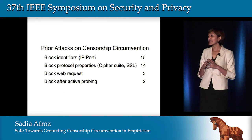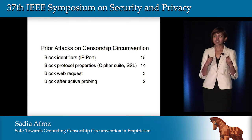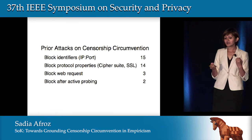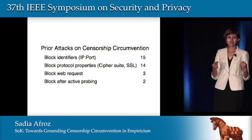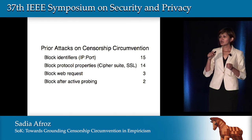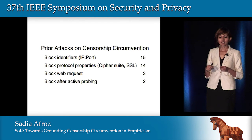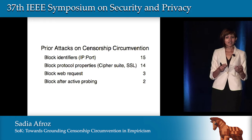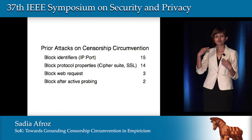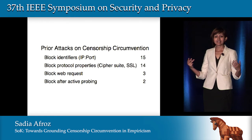We found four main categories of attacks that censors use to block Tor. The majority use just an IP address block list. Another attack uses properties of a protocol — such as which cipher suite Tor uses or the certificate lifetime of an SSL certificate. Some censors look at patterns in the web request. We found only two cases of advanced blocking called active probing, where the censor actively sends a request to a Tor node and blocks it if the node responds.